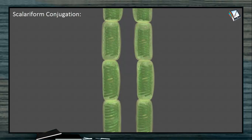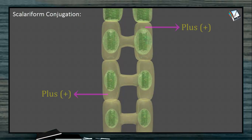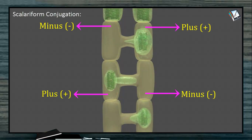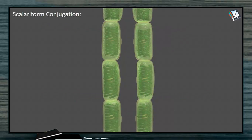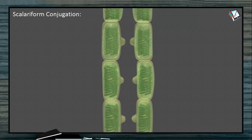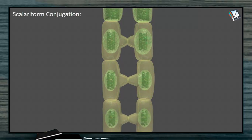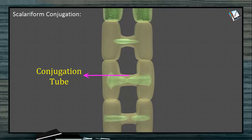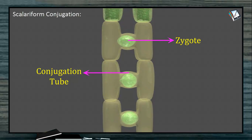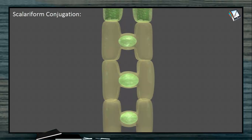It is not always necessary that gametes go from one filament to another. Every filament has both plus and minus strains, and alternate cells may contain zygotes. Alternatively, if both gametes are morphologically as well as physiologically isogamous, both of them move into the conjugation tube and the zygote is found in the conjugation tube. This completes scalariform conjugation.